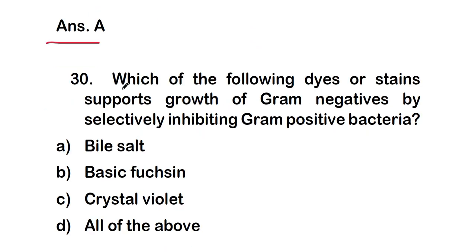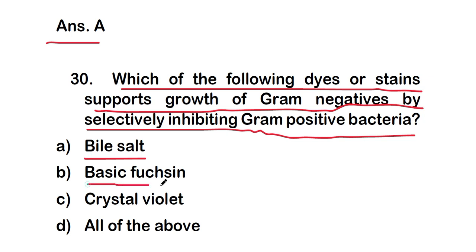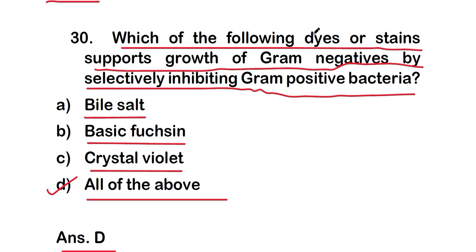Question 30: which of the following dyes or stains support growth of gram-negative bacteria by selectively inhibiting gram-positive bacteria? Option D — all of the above. Bile salt, basic fuchsin, and crystal violet can kill gram-positive bacteria, so these dyes are used in selective media for gram-negative microorganisms.